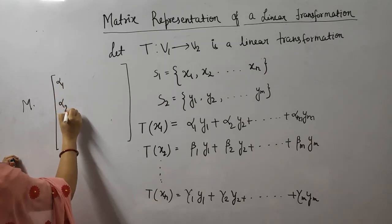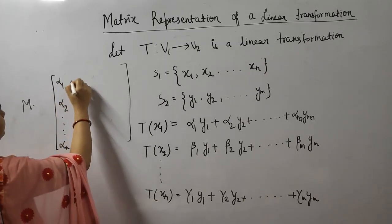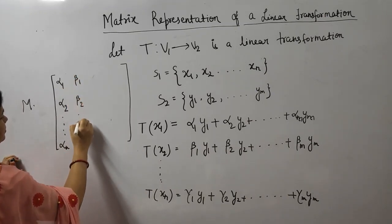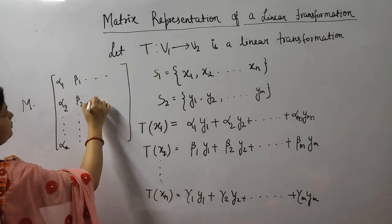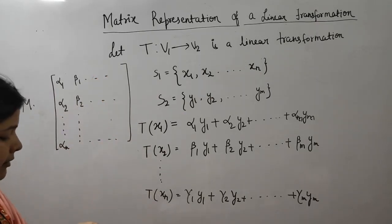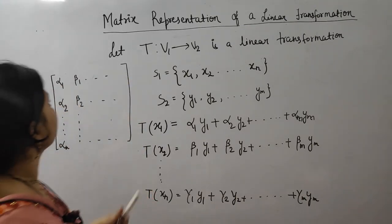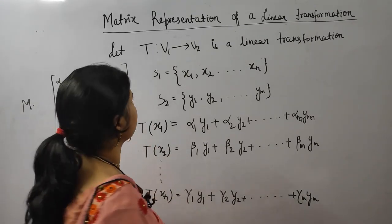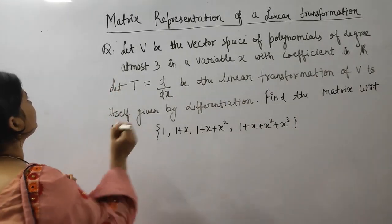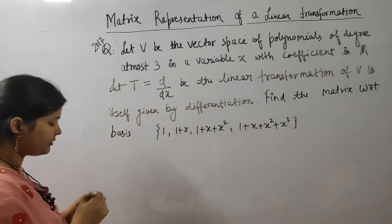The matrix is formed by writing alpha1, alpha2, ..., alpham, beta1, beta2, and so on for all constants. This is our required matrix. Let's understand the procedure with one example. This is a 2017 June CSIR question.